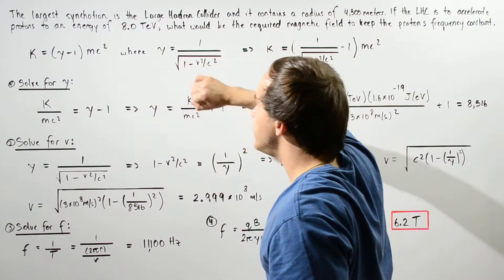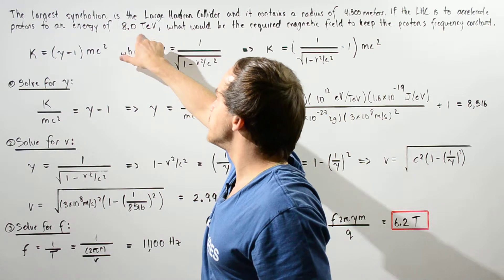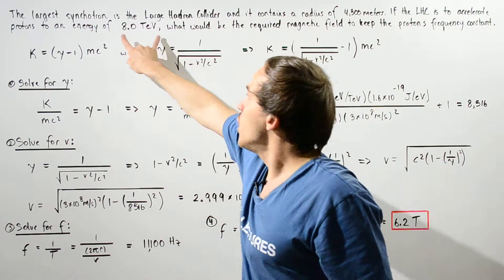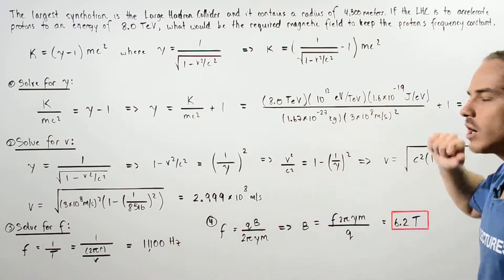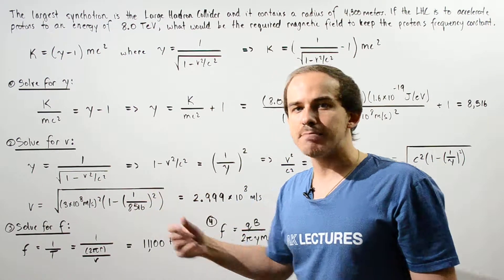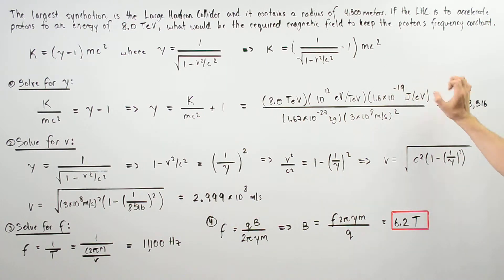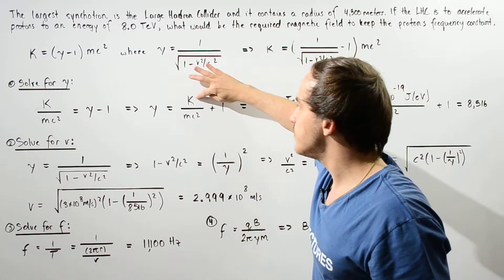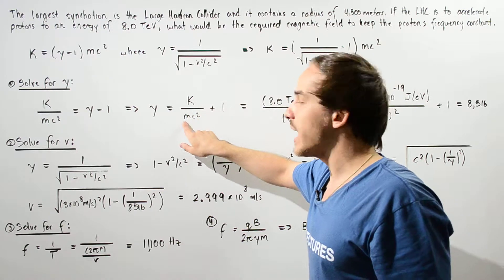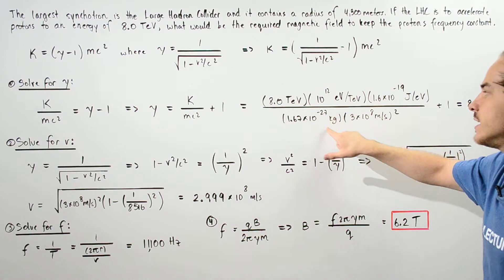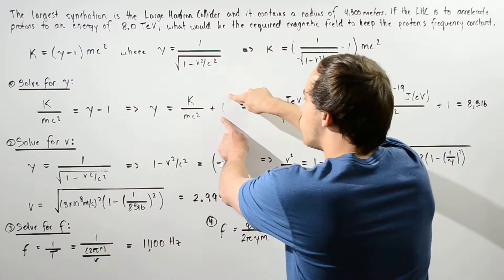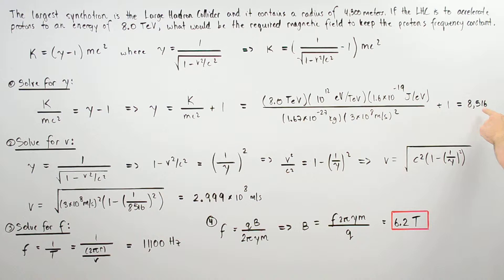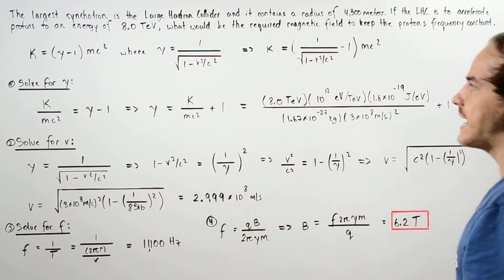We plug in our kinetic energy, first converting from tera electron volts to joules: 1 TeV times 10 to the 12 electron volts per TeV, times 1.6 times 10 to the negative 19 joules per electron volt. We then divide by MC squared, where M is 1.67 times 10 to the negative 27 kilograms times C squared, and add 1. This gives us a gamma factor of 8,516.